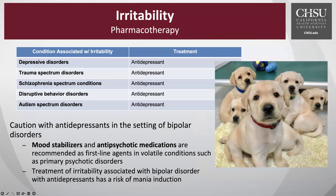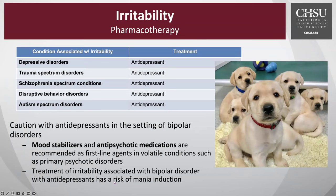In terms of pharmacotherapy for irritability — and I've put in something here that might treat irritability, though I'm not sure if puppies would create or solve it — here we have conditions associated with irritability: depressive disorders, trauma spectrum disorders, schizophrenia spectrum disorders, disruptive behaviors, and autism spectrum disorders. For nearly all of these, irritability responds really well to antidepressant treatment. But just as with impulsivity, we need to be cautious in the setting of bipolar disorders, where mood stabilizers and antipsychotic medications are our first-line agents to avoid inducing or exacerbating mania or hypomania.